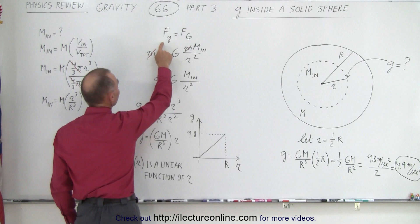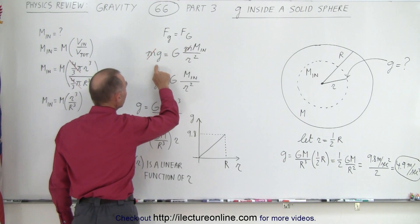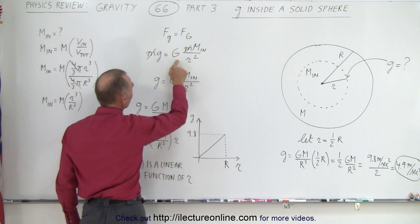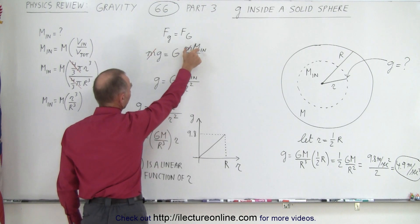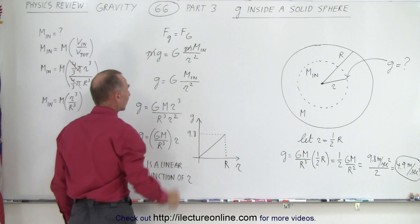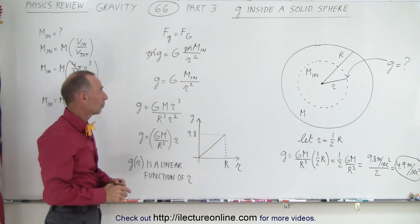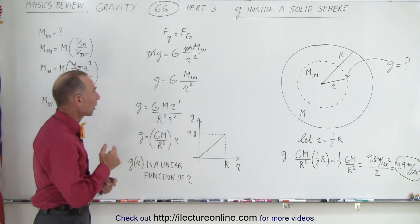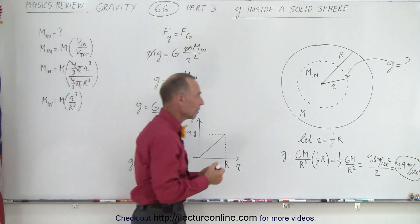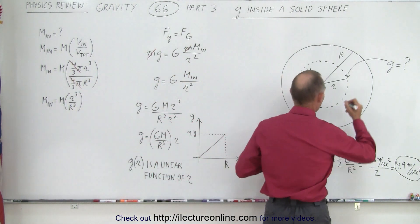The way we do that is that the force of gravity, mg, is equal to the force of gravity using Newton's equation, G times the product of the two masses divided by the distance between the two center of masses squared. Now, we imagine there's a small object here with mass m, like that.